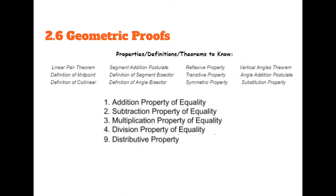Here are a couple more properties that aren't on this list but could definitely be tested, so you should make sure you're familiar with them — all of those from 2.5.